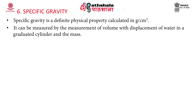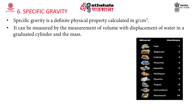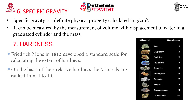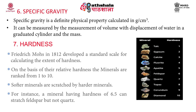The next property is specific gravity. It is defined as a physical property which is calculated in grams per centimetre cube, and can be measured by the displacement of water in a graduated cylinder along with the mass. Next is hardness. Frederick Mohs in 1812 developed a standard scale for calculating the extent of hardness. On the basis of relative hardness, minerals are ranked from 1 to 10. Softer minerals are scratched by harder minerals. For instance, a mineral having hardness of 6.5 can scratch feldspar but not quartz.